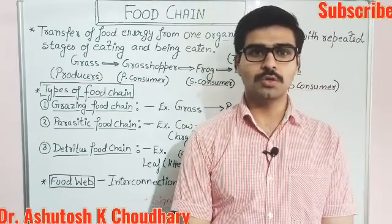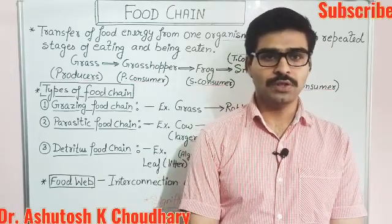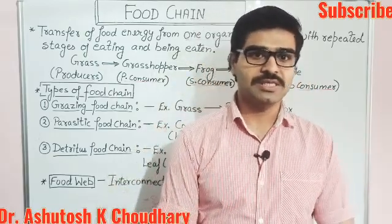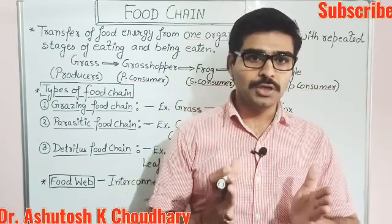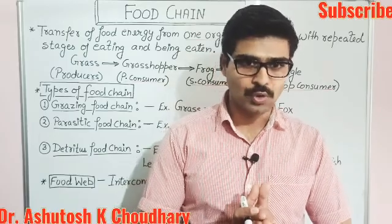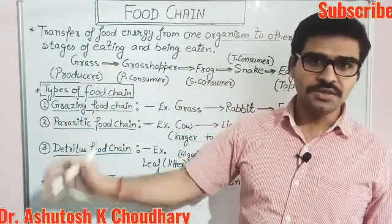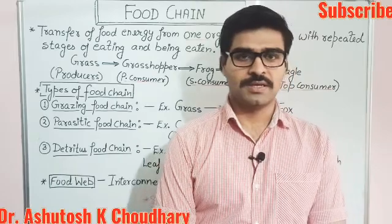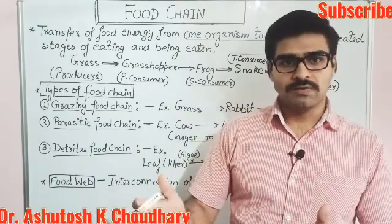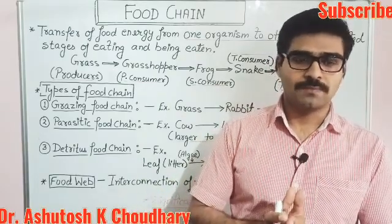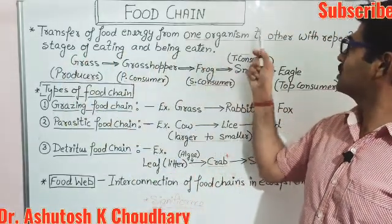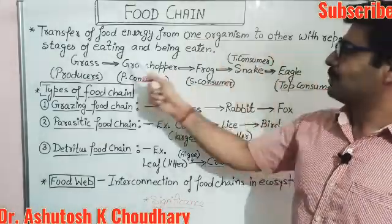This topic is again from the unit ecosystems. The definition of food chain: as we know that in an ecosystem plants and animals are interrelated for their nutritional requirement, and this interrelationship is known as food chain. We can also define it as the transfer of food energy from one trophic level to the other level with repeated stages, or from one organism to the other organism with repeated stages.